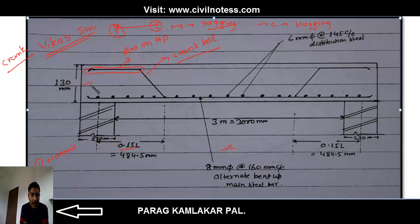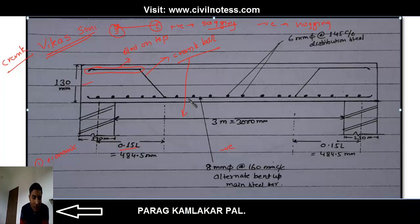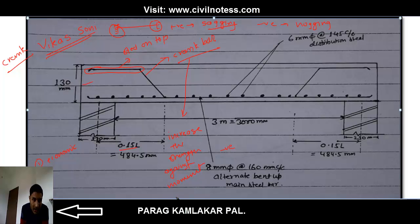Providing the crank bar or bent up bar is a technique to reinforce the moment area. If you see, one layer is straight without cranking, and another layer at the other end goes straight from both sides and bends to the top, increasing the strength under some movement. The crank bar is used to increase the strength against movement at the support side.